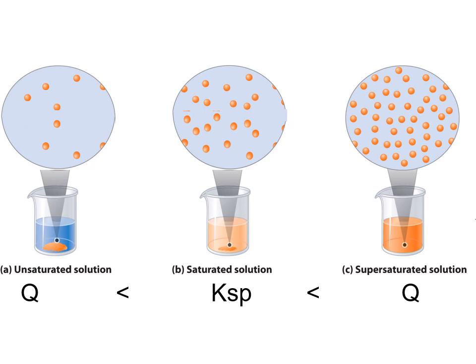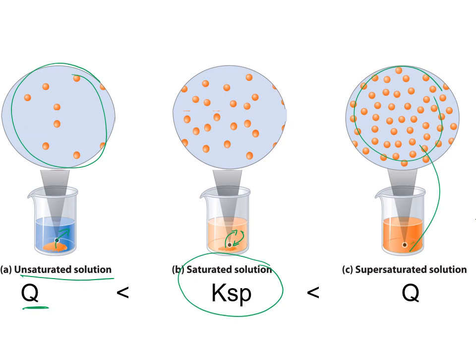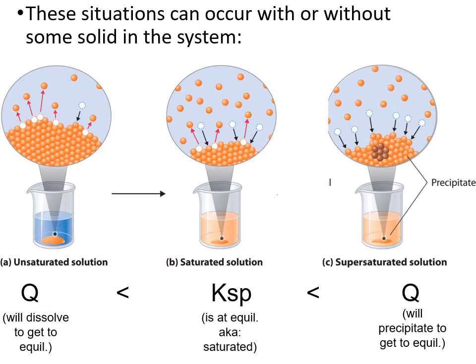Visually: in a saturated solution we're at equilibrium. In an unsaturated solution, Q is less than Ksp — there aren't as many ions in solution and more could dissolve. At equilibrium, ions are dissolving and crystallizing at exactly the same rate. If it's supersaturated, there are too many ions and some must come out of solution and crystallize to form a precipitate. This is true whether or not extra solid is present.